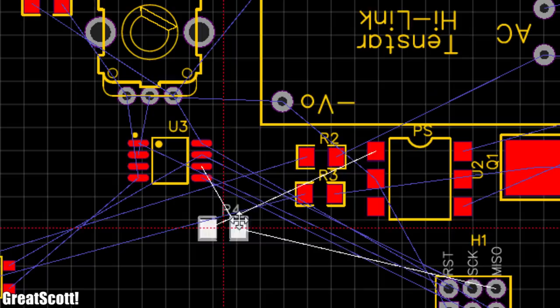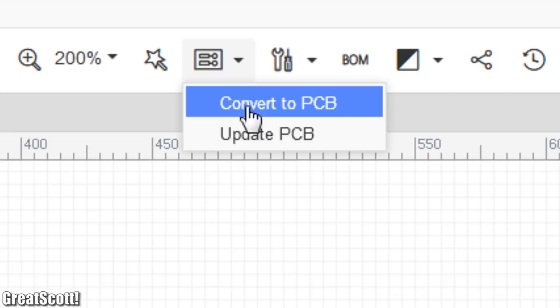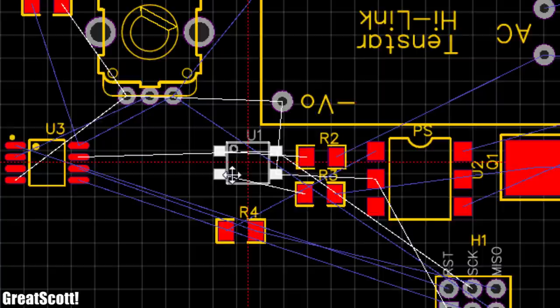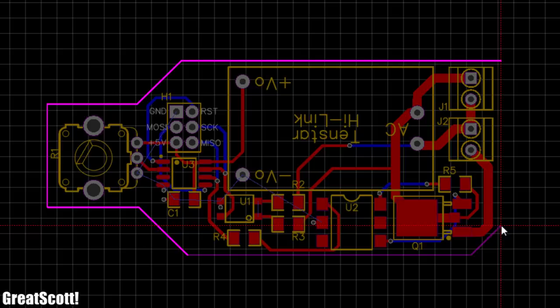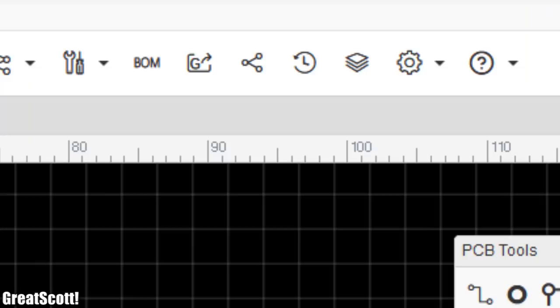So next I clicked the convert to PCB button and started arranging the components in a logical order. After then connecting the components with copper traces, adding the outline of the board, and creating a ground copper layer on the top and bottom side, I think the PCB did not look half bad.